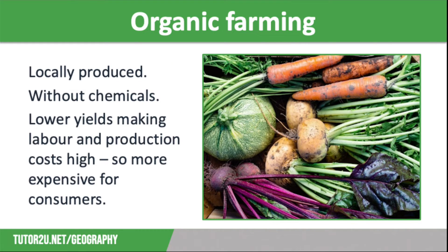There are lots of different strategies being used to increase food supply sustainably. Starting with organic farming: organic farming is producing food locally without the use of chemicals, which is much better for the environment and tastes better. However, because production and labour costs are higher than other forms of farming, organic produce is more expensive to buy. The reason for this is because it has lower yields per hectare, which also means that less food is produced to feed the population.